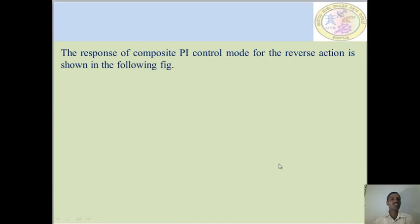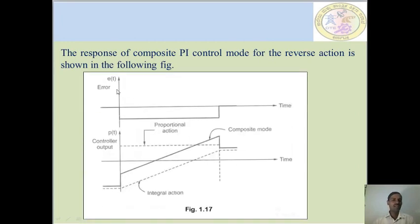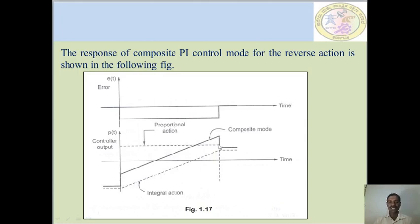The response of the composite PI control mode for reverse action is shown in the following figure. The error e(t) over time is shown, and similarly the controller output p(t) over time. The horizontal dotted line shows the proportional action and the inclined dotted line shows the integral action. Both combined, the integral and proportional controller shows the continuous line of this composite mode.